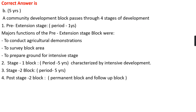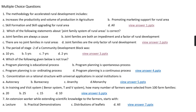A community development block passes through four stages of development. The first stage is the pre-extension stage, which lasts for about one year. Its main functions were to conduct agriculture demonstrations, survey the block area, and prepare ground for the intensive stages. The second stage is stage one block, which lasts for about five years, characterized by intensive development. This is followed by stage two block, which also lasts for five years, and the last stage is the post stage two block, which is a permanent and follow-up block.